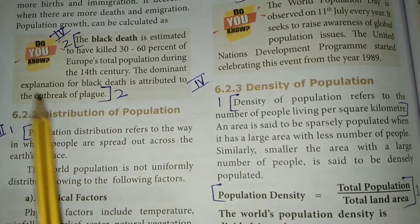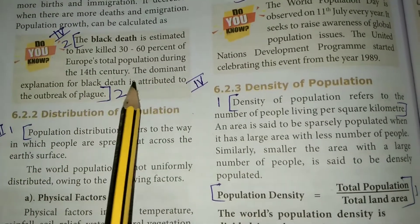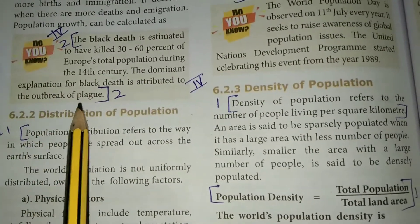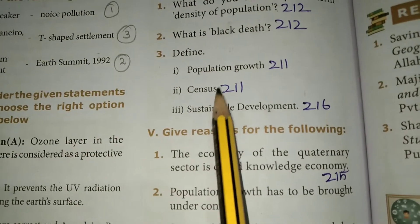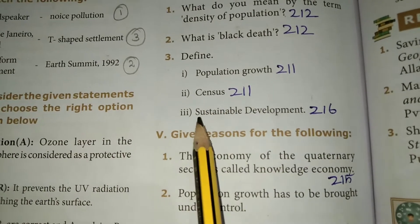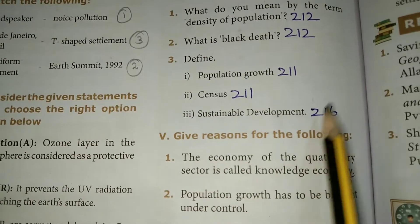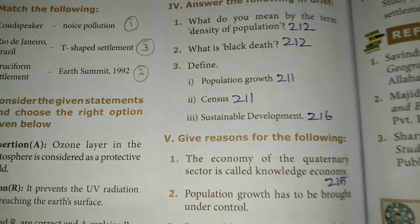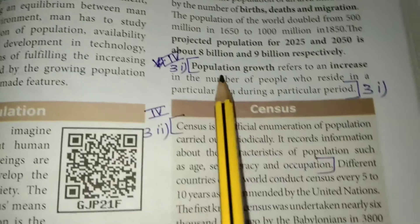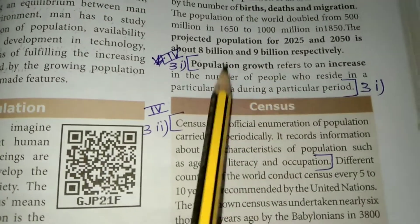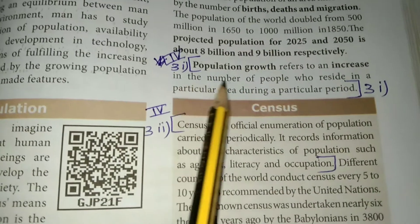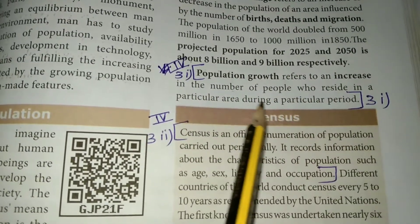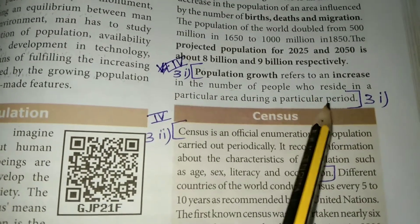The Black Death is estimated to have killed 30–60% of Europe's total population during the 14th century. The dominant explanation for Black Death is attributed to the outbreak of plague. Question 3: Define population growth in the sense of sustainable development. Take page number 211. Population growth refers to the increase in the number of people who reside in a particular area during a particular period.